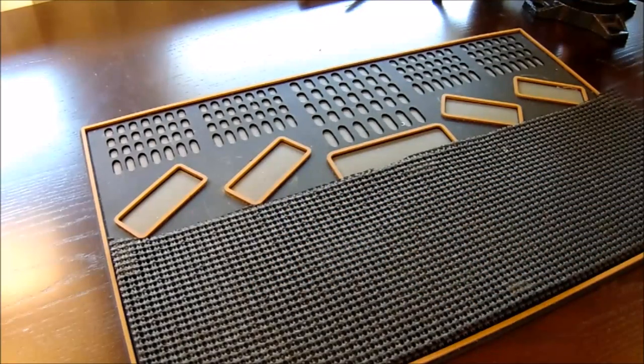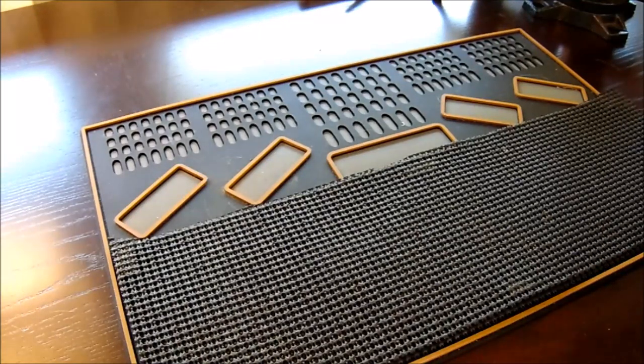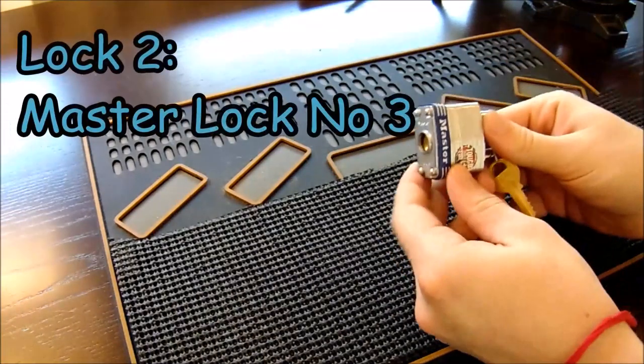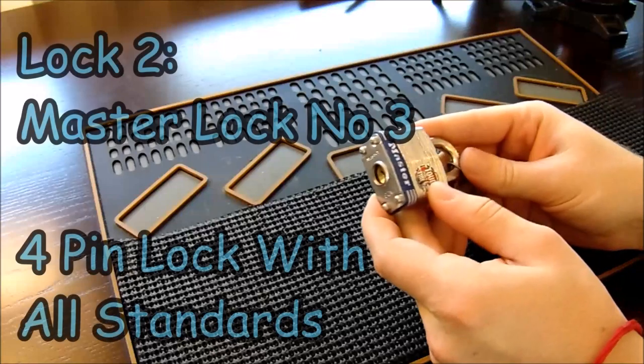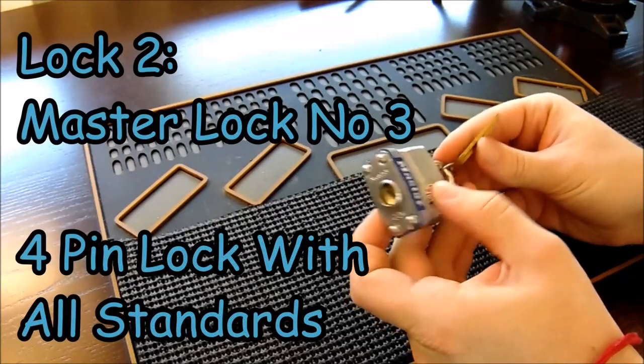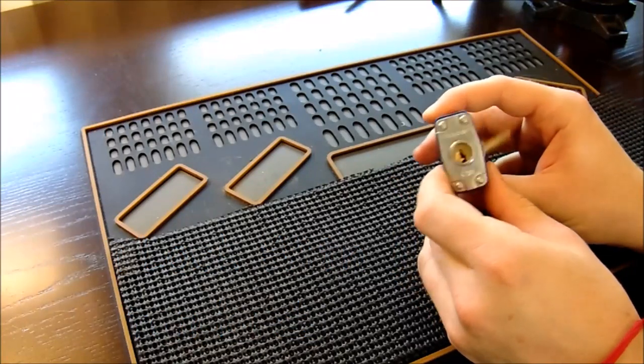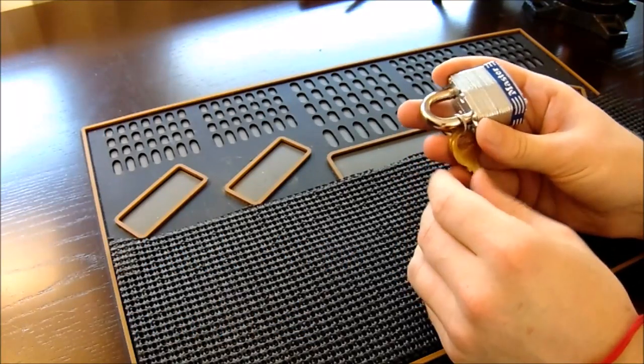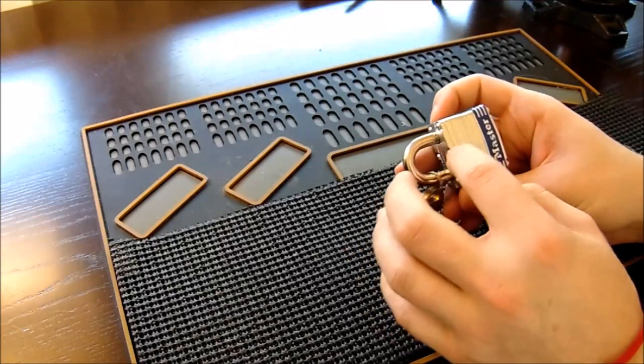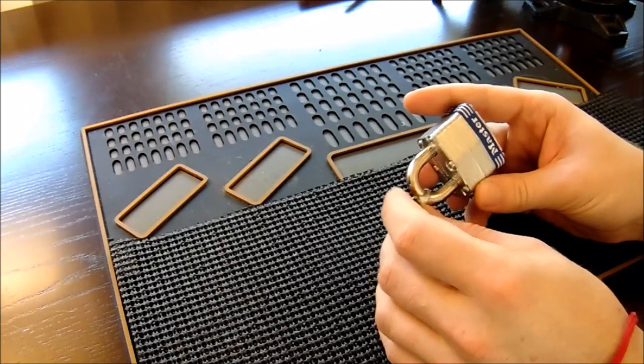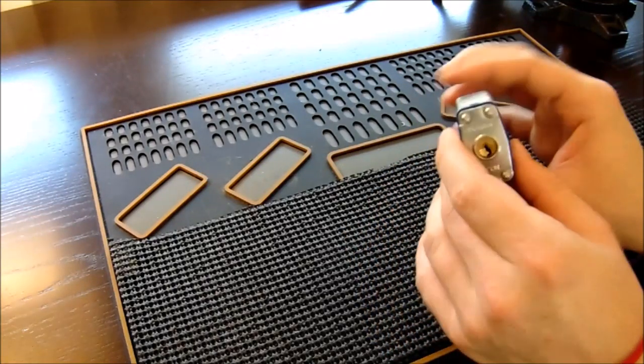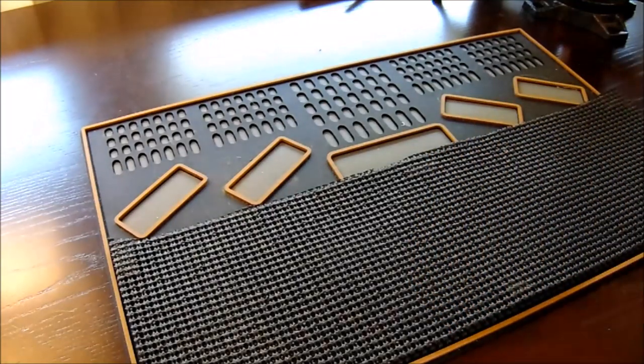The second lock on my list is the quintessential beginner lock, the Master Lock Model No. 3. This lock is a four-pin lock with all standard pins. This lock has pretty loose tolerances and is a pretty easy open for those starting out. It makes a really great transition for people moving on from a clear lock or a cutaway lock. And this is a great lock for people just beginning.